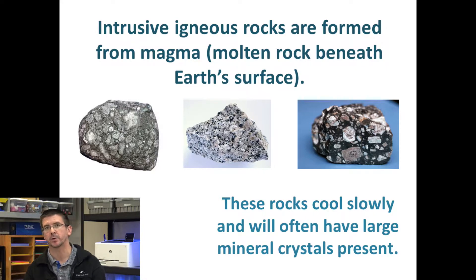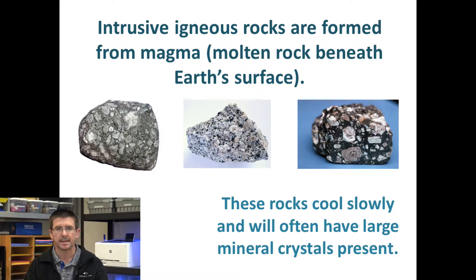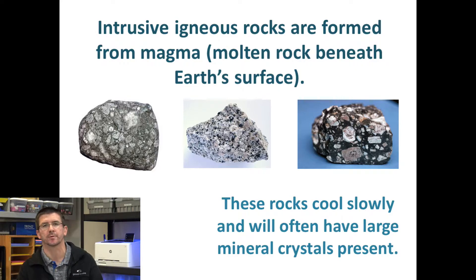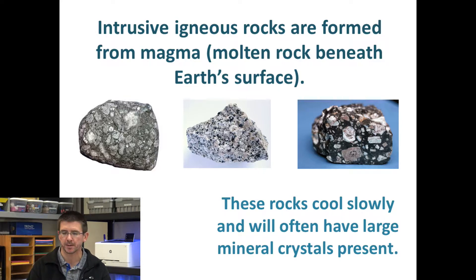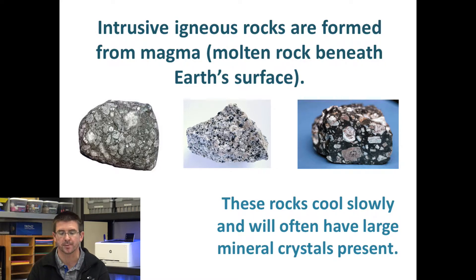Magma is as opposed to lava, which would come out onto the surface through a volcanic eruption. We can tell igneous rocks are intrusive based on the crystalline structure of the rock. Because when rocks cool more slowly, the minerals do have time to clump together and crystallize. So intrusive igneous rocks will typically have larger mineral crystals present in them.